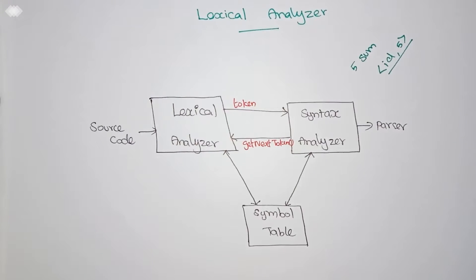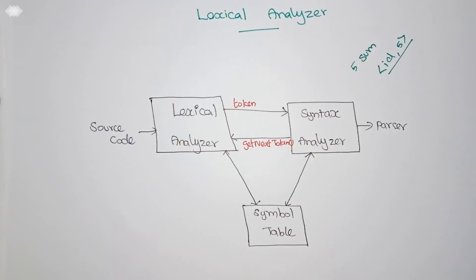The roles of the lexical analyzer include: reading the source code and converting it into tokens; removing all white spaces and tab spaces from the program; and keeping track of line numbers so that when an error occurs, the error message can indicate which line the error is on.